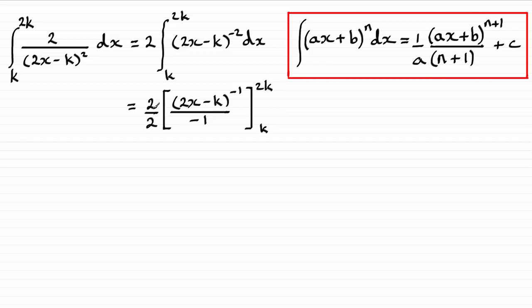So cleaning this up, those 2s cancel, giving us just 1. And I can bring out the negative 1 to the front, so we end up with negative there. And then I can rewrite this as 1 over 2x minus k. So we'll just put our limits in again in between these square brackets. So we've got 1 over 2x minus k, and our limits k to 2k.